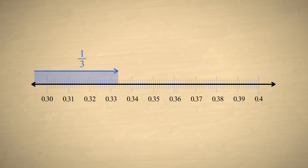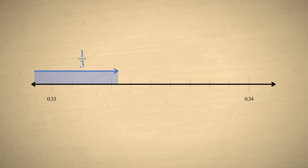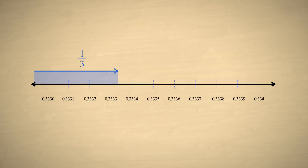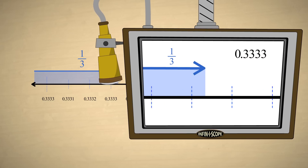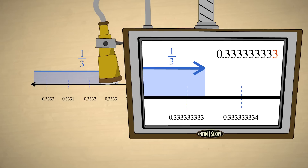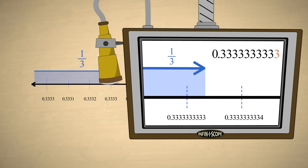If we subdivide these divisions into thousandths, we see that one-third falls somewhere between thirty-three-thousandths and thirty-four-thousandths. If we subdivide into ten-thousandths, we see that one-third still falls between two divisions — it is larger than 0.3333 but smaller than 0.3334. We can repeat this process indefinitely. No matter how close we zoom in, the fraction one-third will never fall exactly on a division. We will just keep adding threes after the decimal point forever.